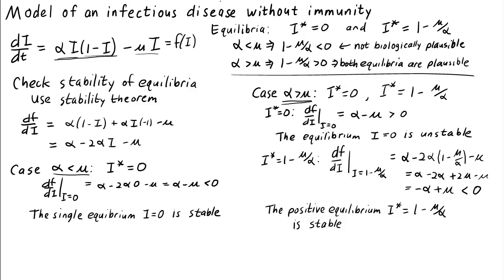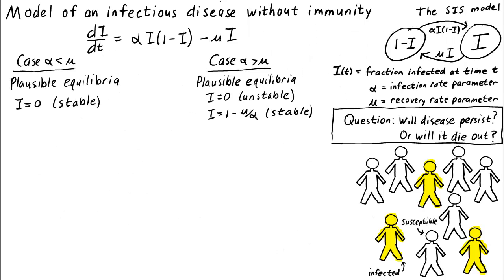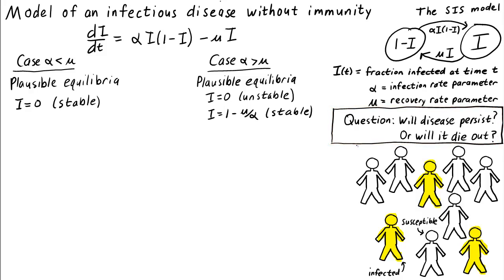So we get very different behavior depending on which is larger: the infection rate parameter alpha, or the recovery rate parameter mu. If the infection rate is smaller than the recovery rate — case one — then the only equilibrium i equals zero is stable. When the infection rate parameter gets larger, the equilibrium at zero becomes unstable and the positive equilibrium 1 minus mu over alpha becomes stable.